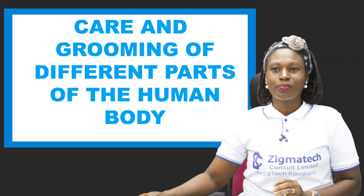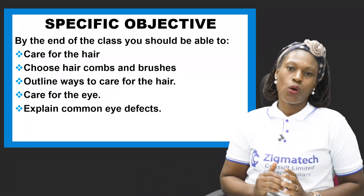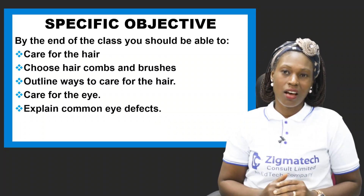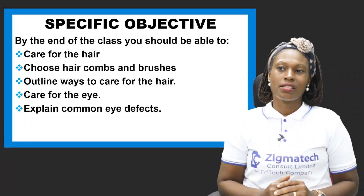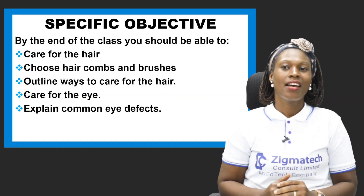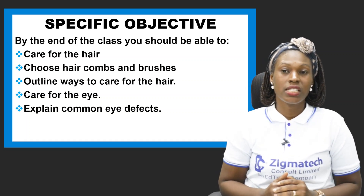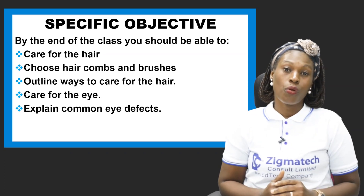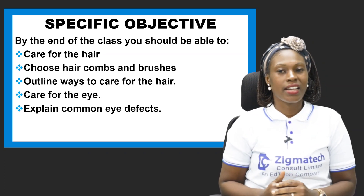Let's look at the specific objectives for this class. By the end of this class you should be able to care for the hair, choose hair combs and brushes, outline ways to care for the hair, care for the eye, and explain common eye defects.